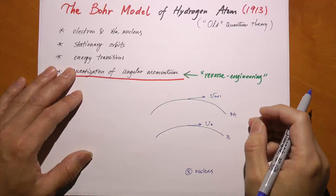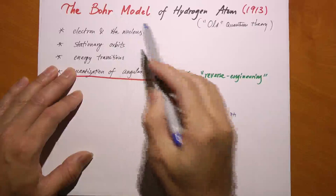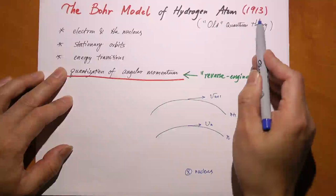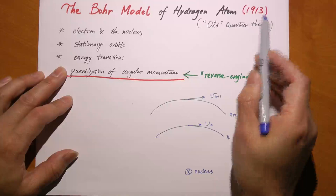The first successful model describing the behavior of the hydrogen atom was the one proposed by Niels Bohr, called the Bohr model. Niels Bohr is widely regarded as the second most important physicist of the 20th century, right after Einstein. He was one of the founding fathers of modern quantum mechanics, but before the birth of modern quantum mechanics, the Bohr model—which belonged to what's called old quantum theory, proposed in 1913—gave us very much insight into the hydrogen atom.